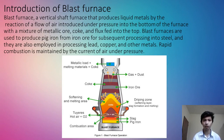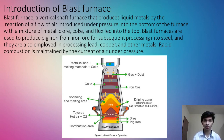A blast furnace is a vertical shaft furnace that produces liquid metals by the reaction of a flow of air introduced under pressure into the bottom of the furnace, with a mixture of metallic ore, coke and flux fed into the top. Blast furnaces are used to produce pig iron from iron ore for subsequent processing into steel, and they are also employed in processing lead, copper and other metals. Rapid combustion is maintained by the current of air under pressure.